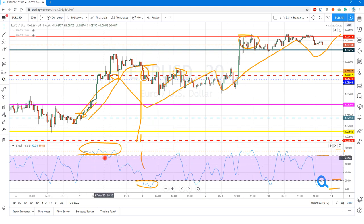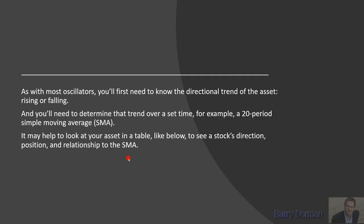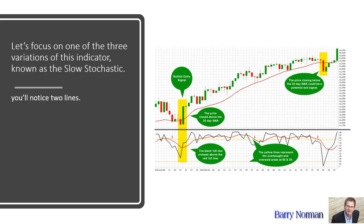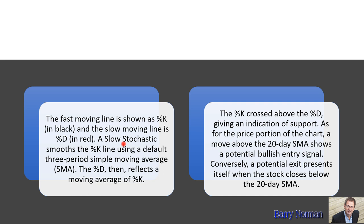Let's talk about what these calculations are. As with most oscillators, you'll need to know the directional trend of the asset over a set period of time — for example, using a 20-period moving average to determine if an asset is in an uptrend or a downtrend. To help us, we have a second line called the D line, which is a three-period moving average of the K line. When those two lines cross over we get some type of indication. The fast moving line is the K line and the slow moving line is the D line. A slow stochastic smooths the K line using a default three-period simple moving average.